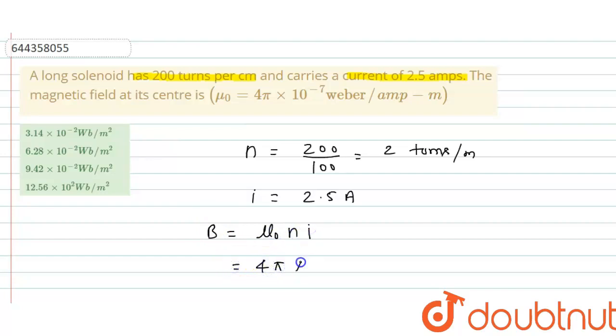Put all these values: μ₀ is 4π × 10⁻⁷, number of turns per meter is 2, and current is 2.5.